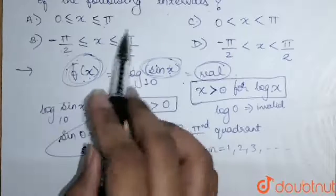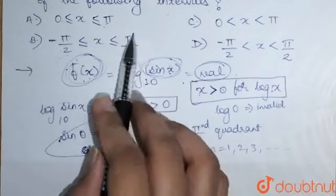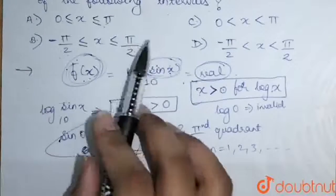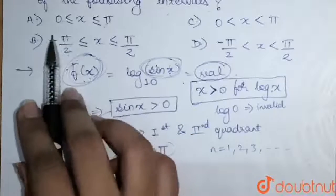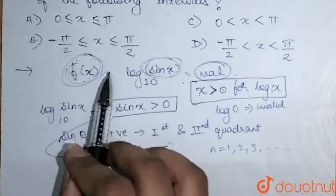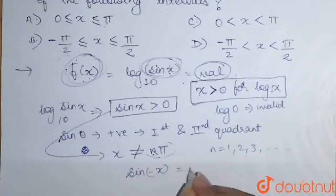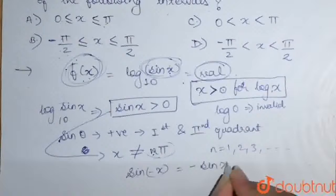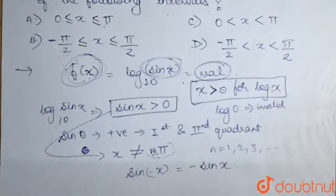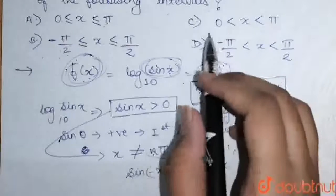Now here, minus π by 2 to π by 2. On π by 2, sin x is 1, that is valid. But on minus π by 2, sin x is minus 1. Because sin of minus x is minus sin x. So it is not valid. B option is also not valid.